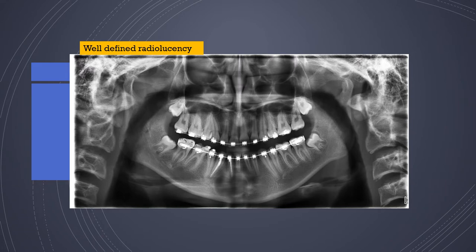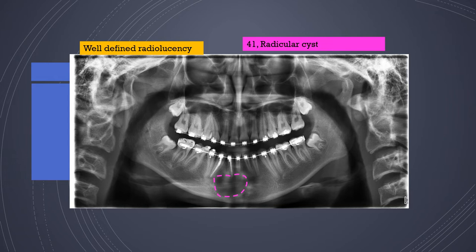Panoramic radiographs are excellent for patients indicated for orthodontics, both before and after treatment. But sometimes unexpected issues arise during treatment. For example, this is a case of non-vital anterior teeth, likely rendered non-vital due to force during orthodontic treatment, and you can also see that a cystic area has caused drifting of the root of the canine.